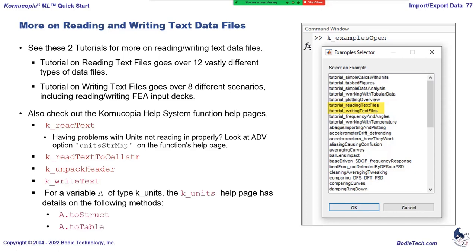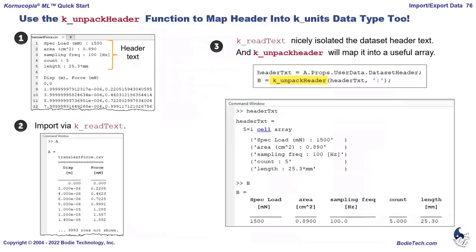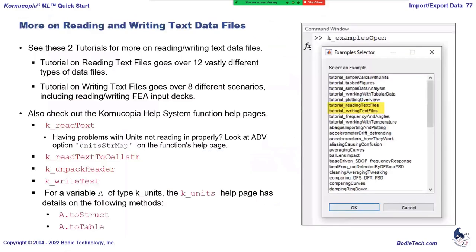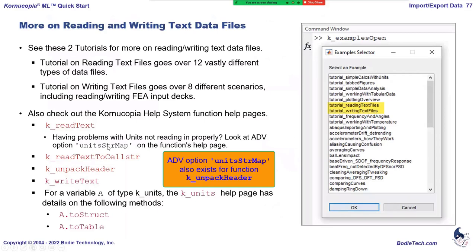You can also check the help system, particularly on k-read text, which has advanced options. One you might need is the unit string map ADV option. This handles cases where unit strings in files are not correct — for example, if millimeters was written as capital 'MM'. Chronucopia doesn't have a unit like that, and units are case sensitive, so it would give an error. You can use this advanced option to map 'MM' to 'mm', or to handle other unit names that Chronucopia doesn't recognize.